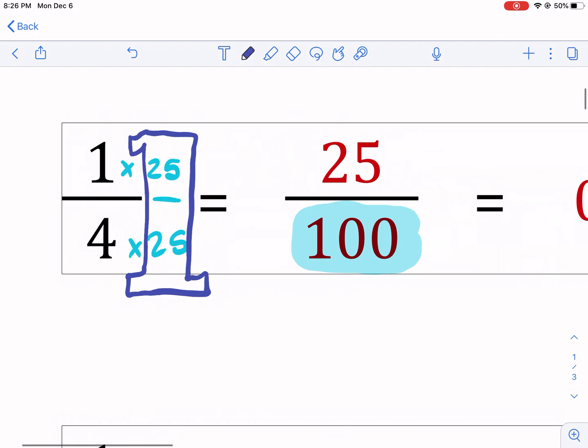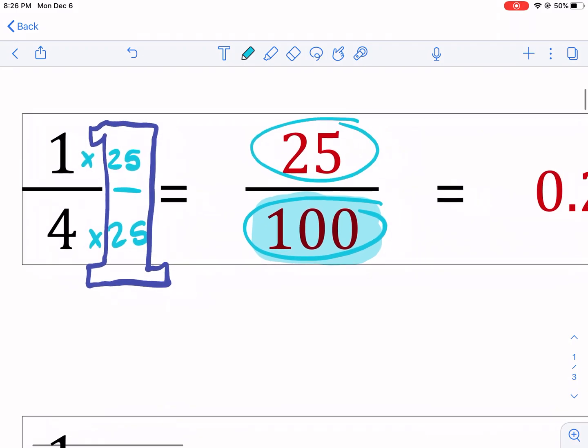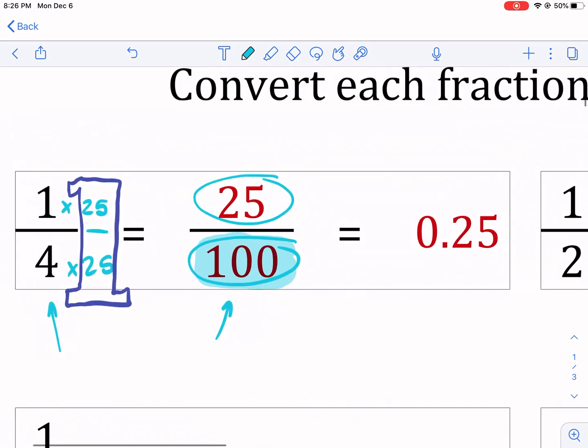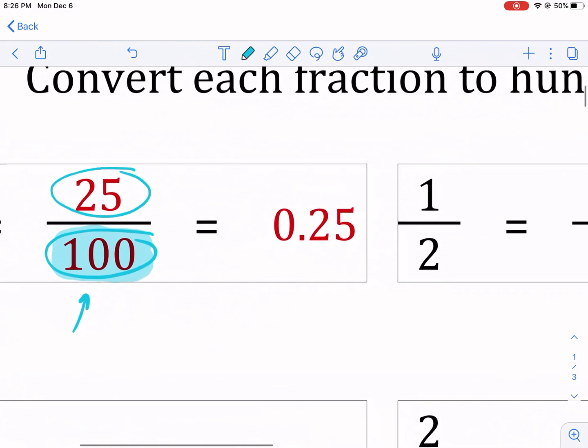We multiply the bottom by 25, we get 100. As it says here, we multiply the top by 25, one times 25 gives you 25 right here. And now we have the same fraction. That's one fourth. That's one fourth, or one quarter. That's why it's 25 out of 100. We just changed the way it looks from one fourth to different versions, same fraction.